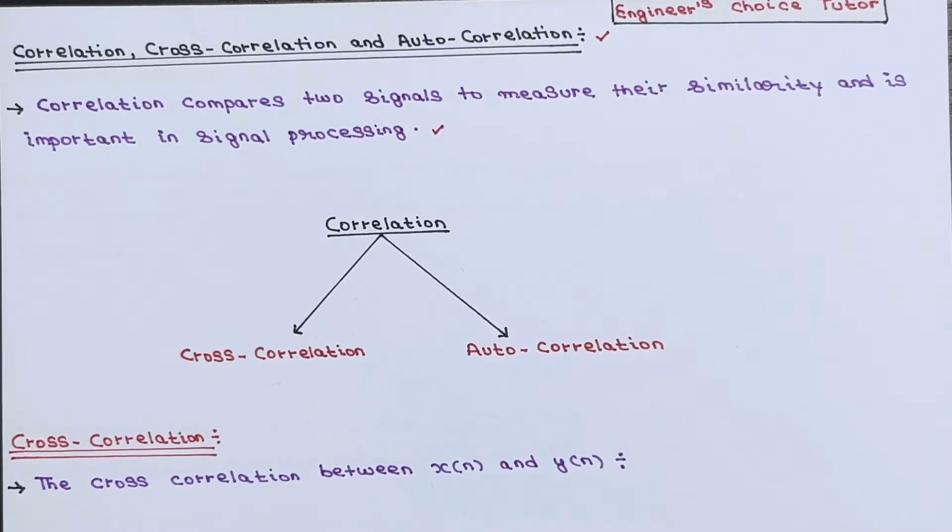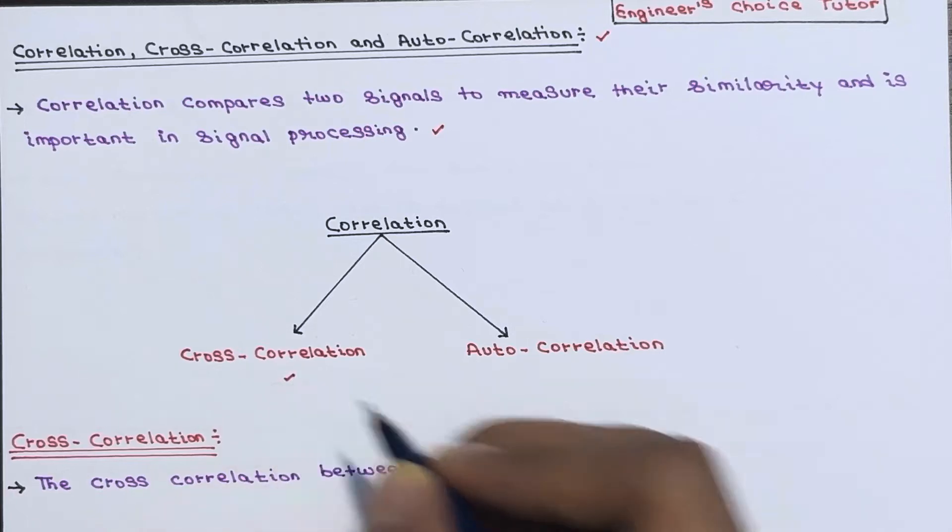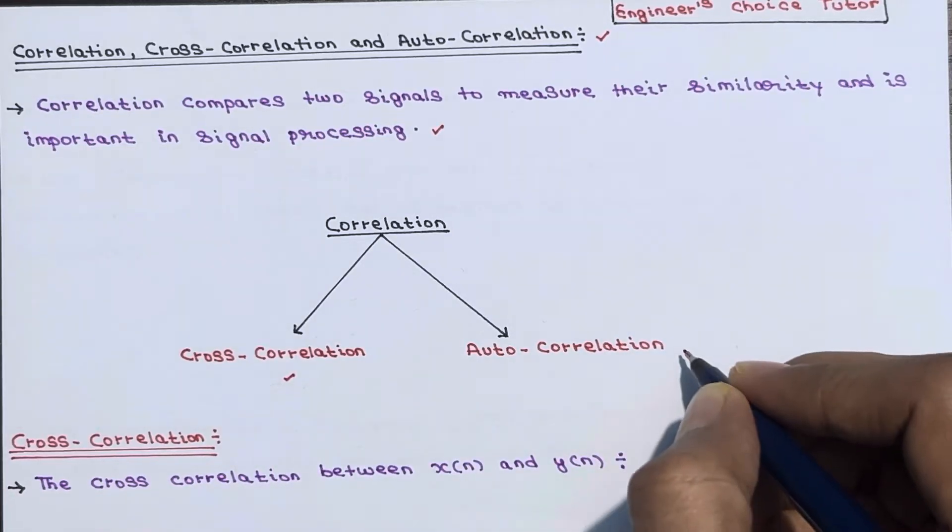So basically there are two types of correlation. The first one is cross correlation and the second one is auto-correlation.